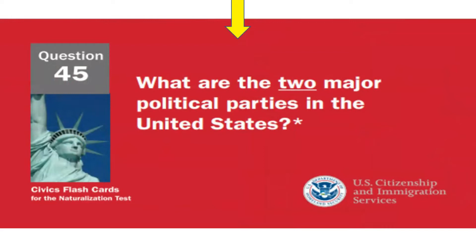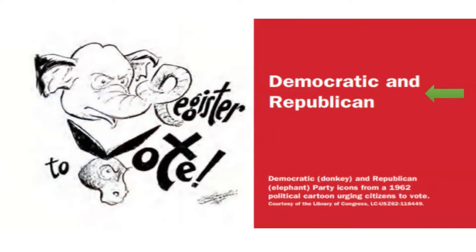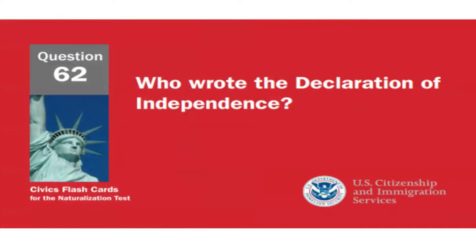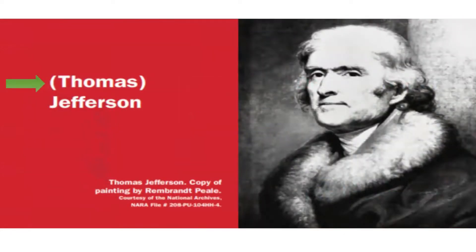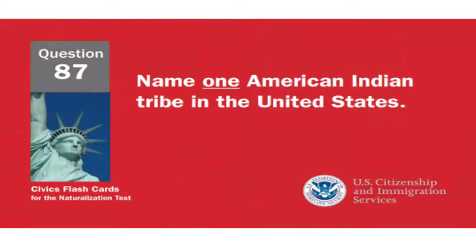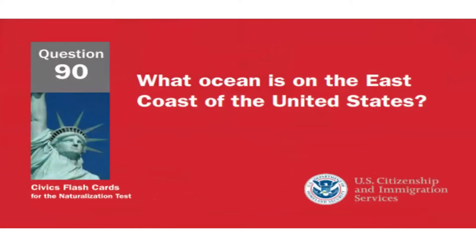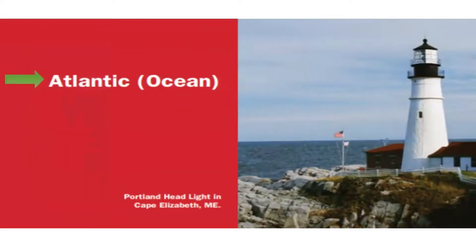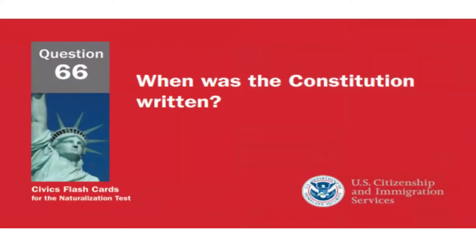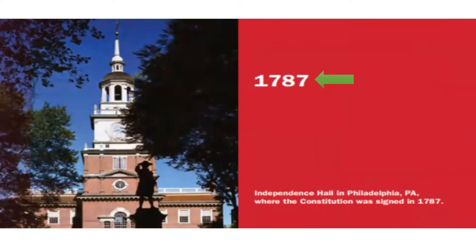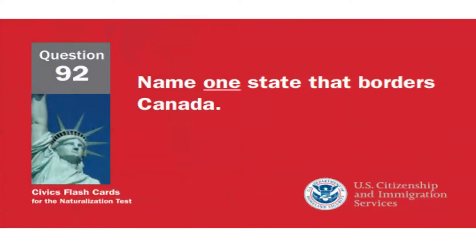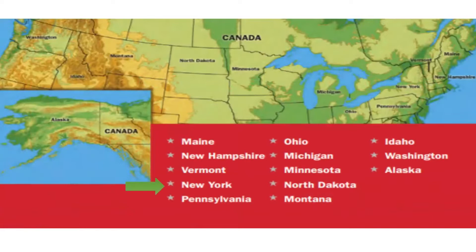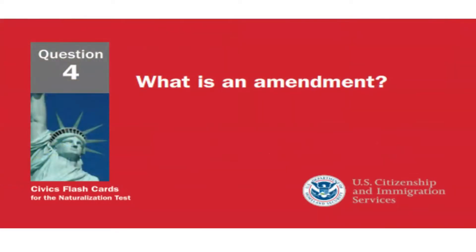What did Martin Luther King Jr. do? Fought for civil rights. What are the two major political parties in the United States? Democratic and Republican. Who wrote the Declaration of Independence? Thomas Jefferson. Name one American Indian tribe in the United States. Cherokee. What ocean is on the east coast of the United States? Atlantic Ocean. When was the Constitution written? 1787. Name one state that borders Canada. New York.